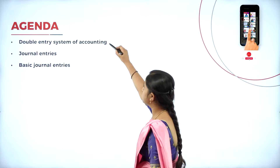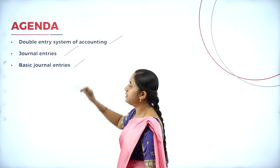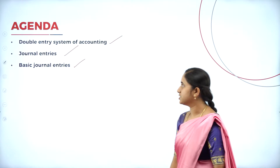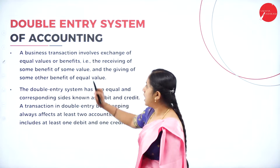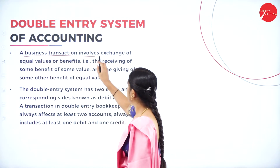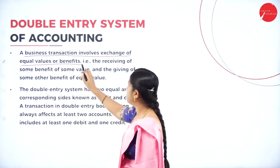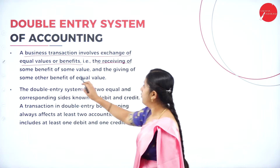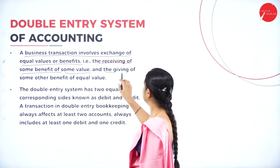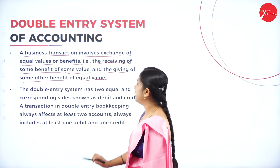In today's session, let us discuss the double entry system of accounting, journal entries, and basic journal entries. The double entry system of accounting is based on the principle that a business transaction involves an exchange of equal value — receiving some benefit of some value and giving some other benefit of equal value.